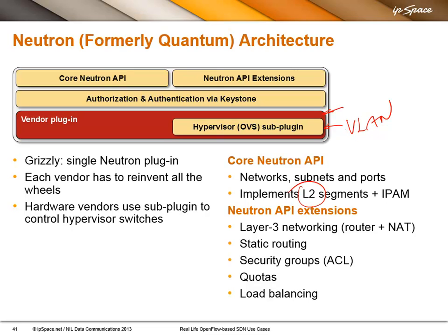There are all sorts of extensions or additions to the Neutron API that were added in recent releases, like Layer 3 networking, static routing, and security groups, which are access control lists. To implement those, you would usually have to rely on some sort of external device, be it a VM that implements a router or a Layer 3 switch in the physical network.